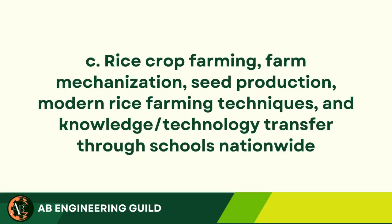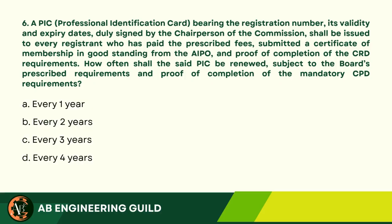Answer: C. Rice Crop Farming, Farm Mechanization, Production, Modern Rice Farming Techniques, and Knowledge/Technology Transfer Through Schools Nationwide. Question 6: A PIC (Professional Identification Card) bearing the registration number, its validity, and expiry dates, duly signed by the chairperson of the commission, shall be issued to every registrant who has paid the prescribed fees, submitted a certificate of membership in good standing from the AIPO, and proof of completion of the CPD requirements. How often shall the said PIC be renewed, subject to the board's prescribed requirements and proof of completion of the mandatory CPD requirements? A. Every 1 year. B. Every 2 years. C. Every 3 years. D. Every 4 years.